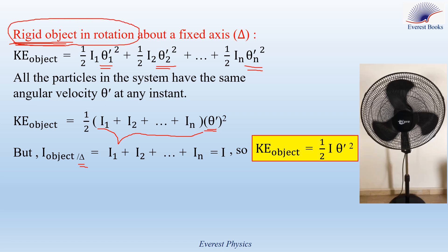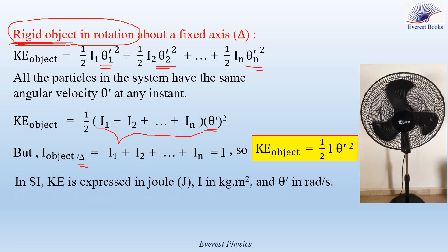Now let's discuss the SI units. In SI, kinetic energy is expressed in joules, the moment of inertia in kilogram·meter², and θ' in radians per second. Since I is a positive quantity and θ'² is also a positive quantity, the kinetic energy of a rotating object is always a positive quantity.